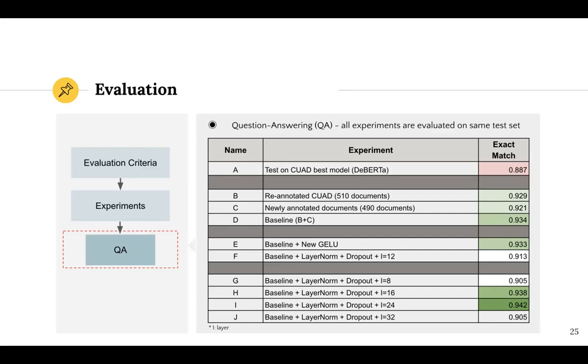The baseline experiment, D, achieved an EM of 0.934, which indicates the quality of the combined dataset compared to the existing dataset, CUAD. Even though our baseline model achieved a comparatively higher score, we found some mistakenly identified parties with non-formal forms and partial forms during our error analysis.